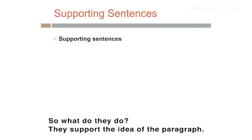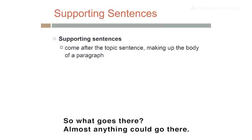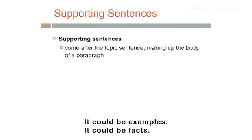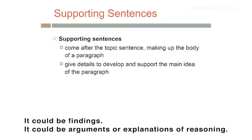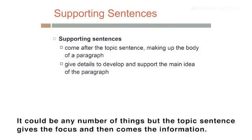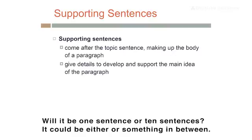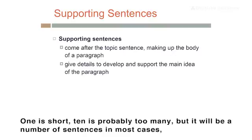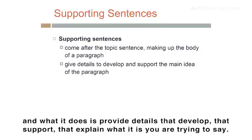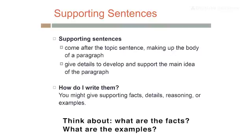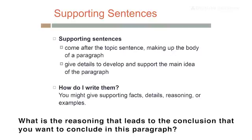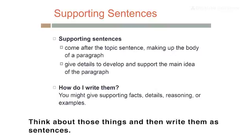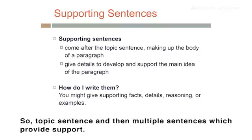After the topic sentence comes the supporting sentences. What do they do? They support the idea of the paragraph. Almost anything could go there — examples, facts, findings, arguments, explanations of reasoning. The topic sentence gives the focus, and then comes the information. This is the bulk of the paragraph — it could be one sentence or up to about ten, or something in between. It will provide details that develop and support and explain what it is you're trying to say. Think about what are the facts, the examples, the reasoning that leads to the conclusion you want to reach in this paragraph.